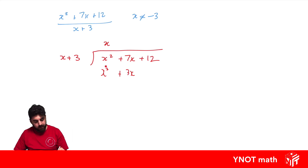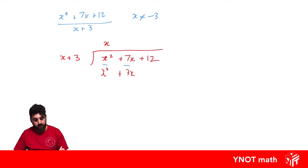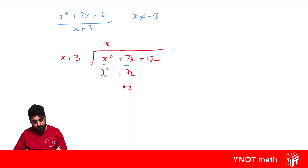If you've done this correctly, the leading terms should always match up. The next step is to subtract: x squared minus x squared gives 0, then 7x minus 3x gives positive 4x. Our final step is to bring down our next term, which is positive 12.